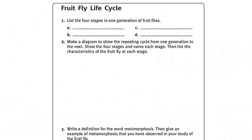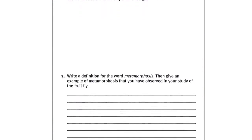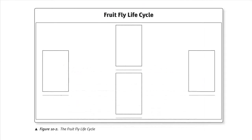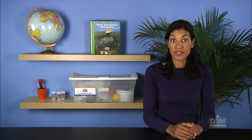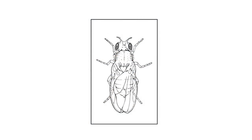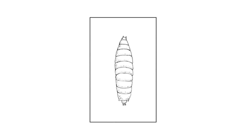To prepare for the activity, make a copy of Activity Sheet 10 for each student and tape the fruit fly life cycle chart to the front wall of the classroom. Make one copy of the fruit fly life cycle pictures, cut the pictures apart so that there are four separate sheets, and display them in random order at the front of the classroom.